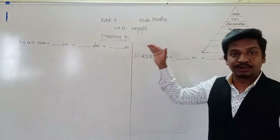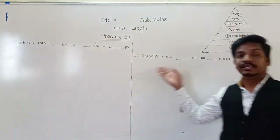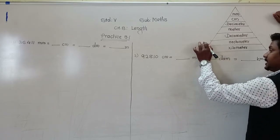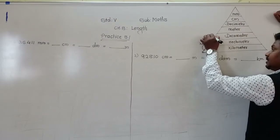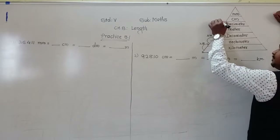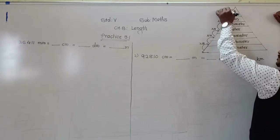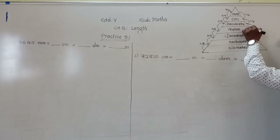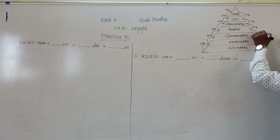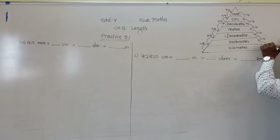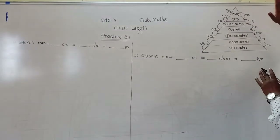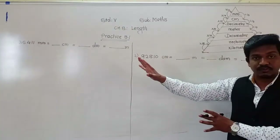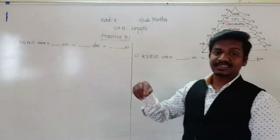Let us solve practice exercise 8.1, which involves conversion of units. Write this triangle in your notebook — it is very important. When we go up each step, we multiply by 10. When we come down each step, we divide by 10. Once you remember this, you can draw the triangle and take help from it.